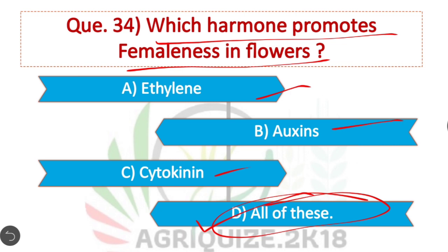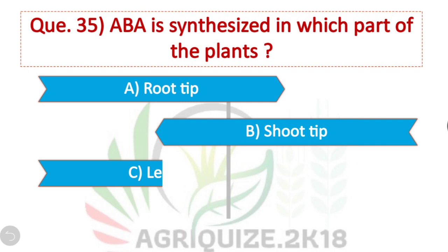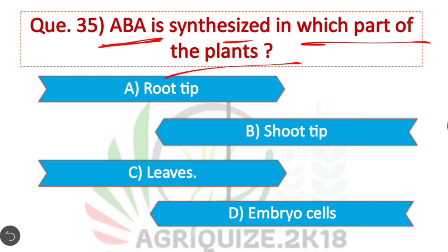Question 35: Abscisic acid is synthesized in which part of the plant? Option C: In leaves. Abscisic acid is synthesized in leaves.